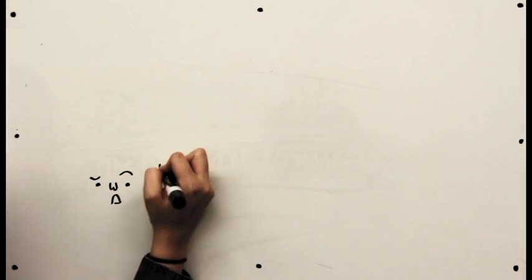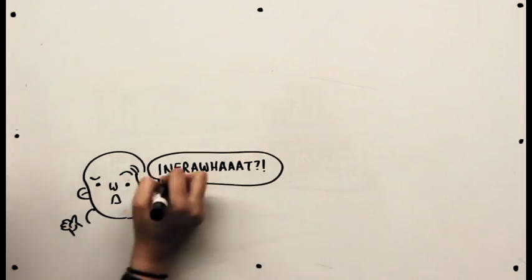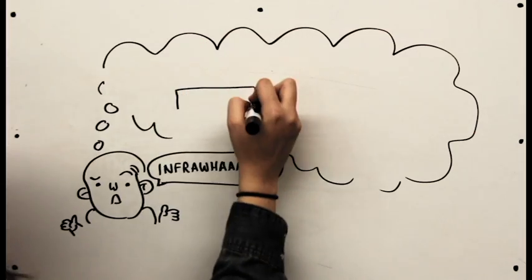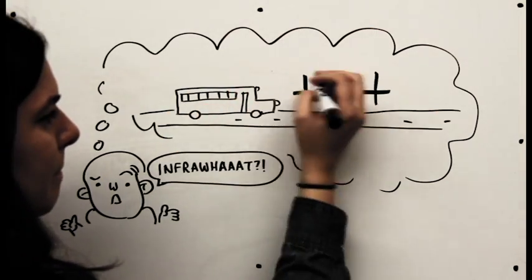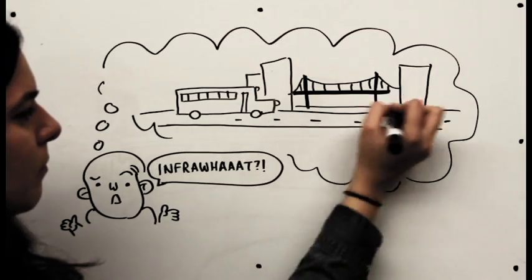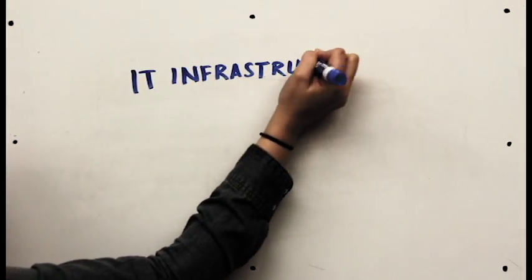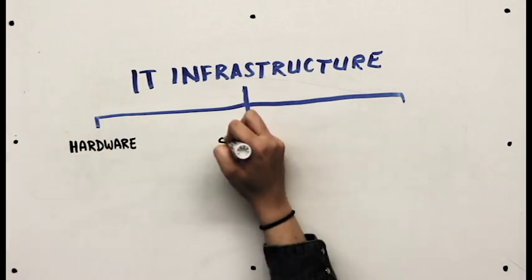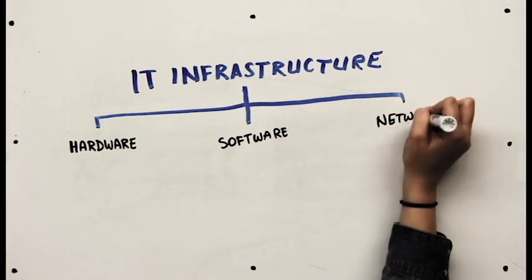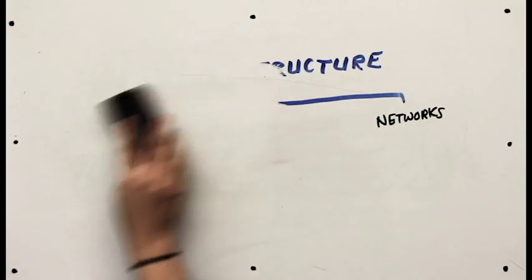First off, the word IT infrastructure may not make any sense to you, and that's okay. You may have heard the word infrastructure before in reference to things like city buses, roads, bridges, and other structures that make cities more connected. You won't find any city buses in IT infrastructure, but it is a similar idea. Simply put, IT infrastructure is a combination of hardware, software, networks, and all other kinds of information technology components that work together to monitor, control, and support your IT services.